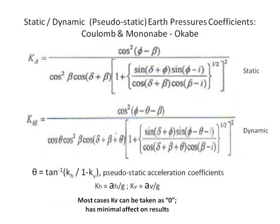This next slide shows the active earth pressure coefficient for the static case and the parameters noted on the previous slide. The dynamic case shows the Mononobe-Okabe version, which is an extension of Coulomb theory. It factors in the term theta, which is a function of the horizontal and vertical pseudostatic acceleration coefficients defined below. In most cases the vertical pseudostatic acceleration coefficient can be taken as zero because it has minimal effect on the results.